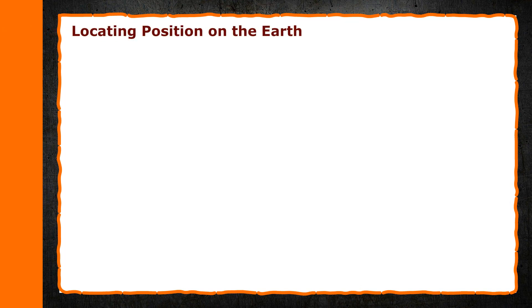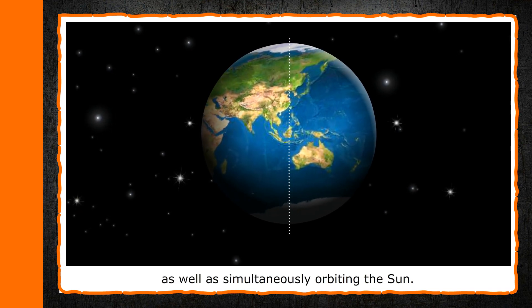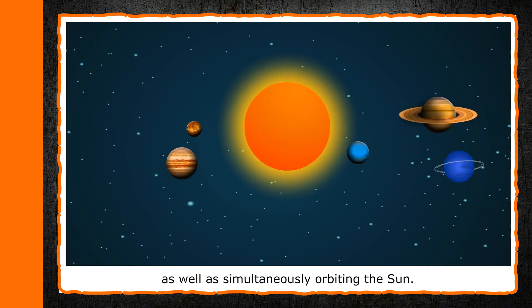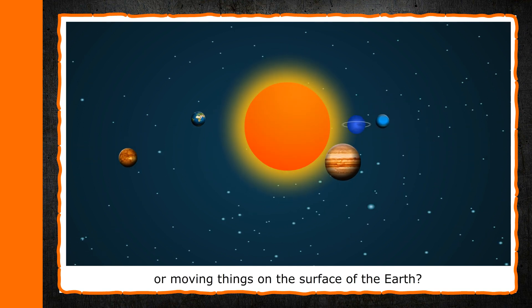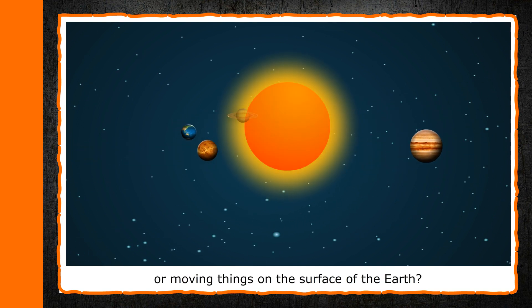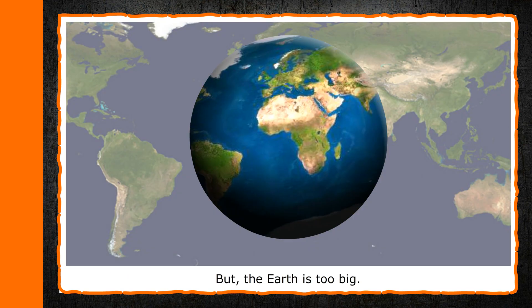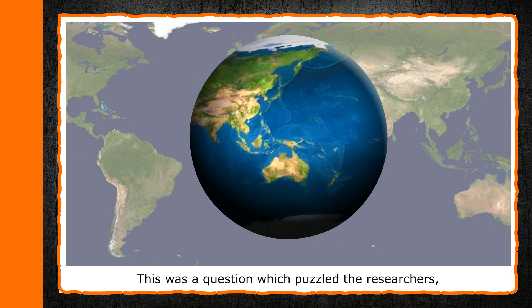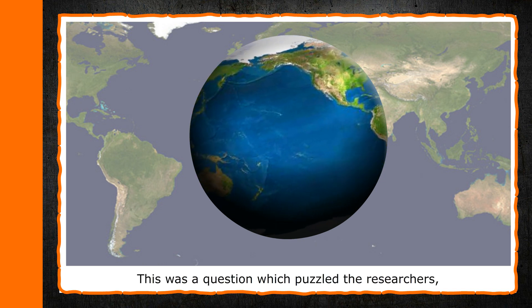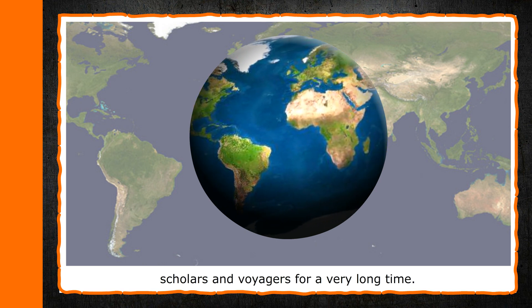Locating Position on the Earth. We know that the earth is continuously rotating on its axis as well as simultaneously orbiting the sun. Then, how do we mark all the stationary or moving things on the surface of the earth? When we have to go somewhere, we take the help of a map. But the earth is too big. So how can we draw a map on it? This was a question which puzzled the researchers, scholars and voyagers for a very long time.